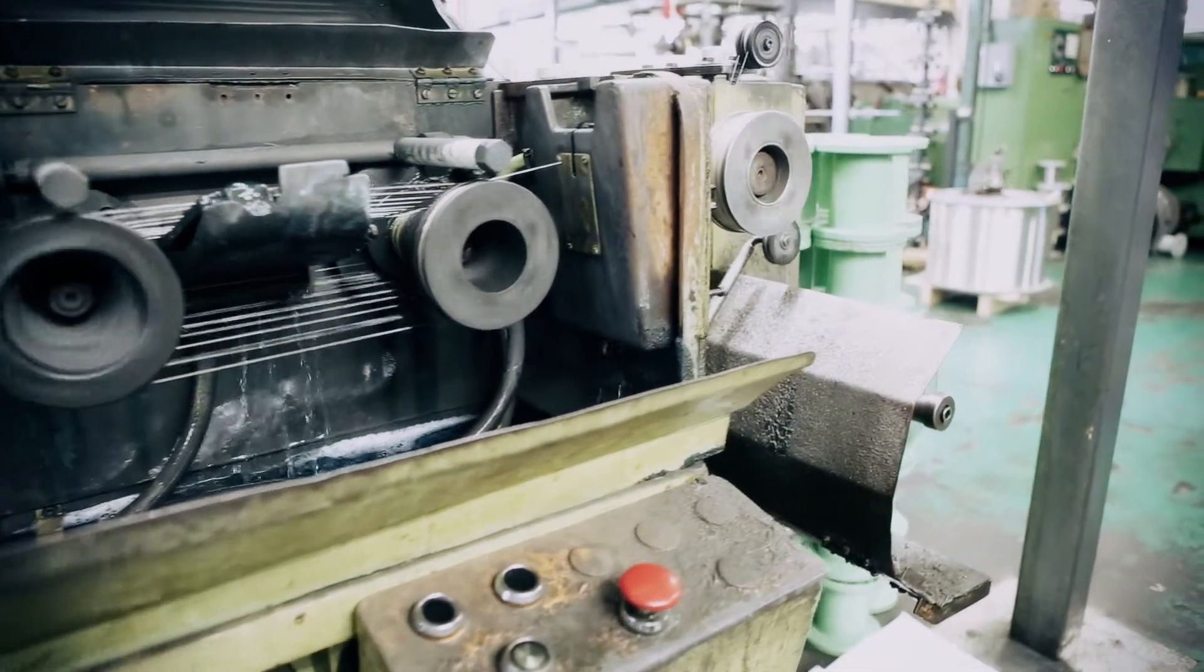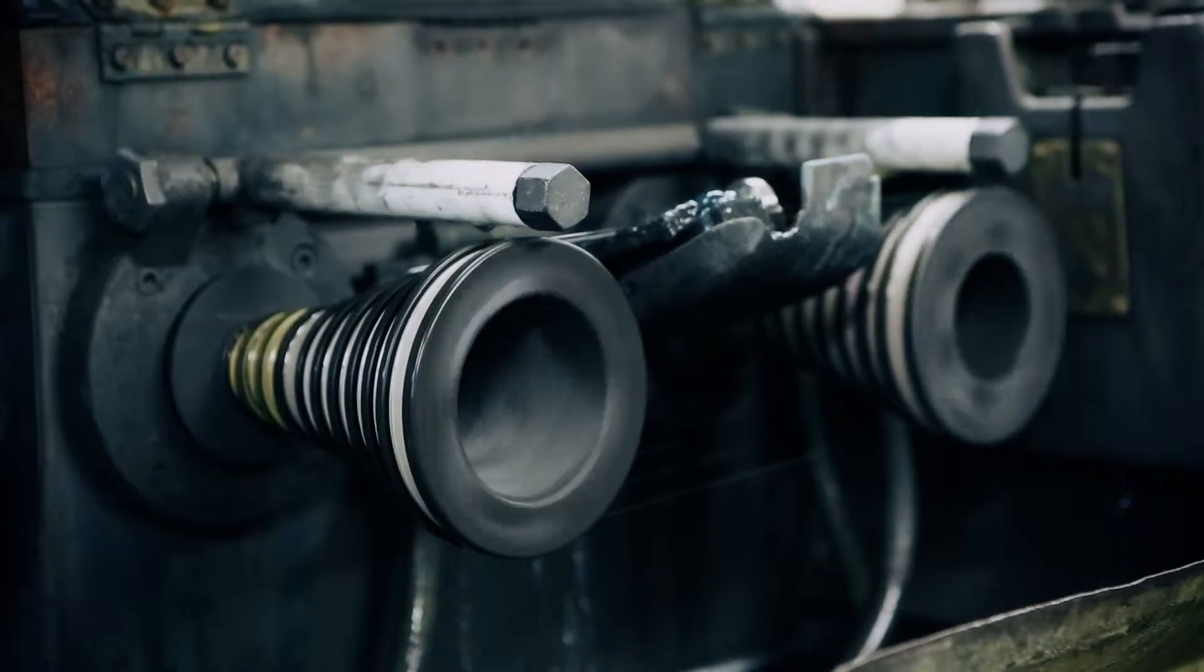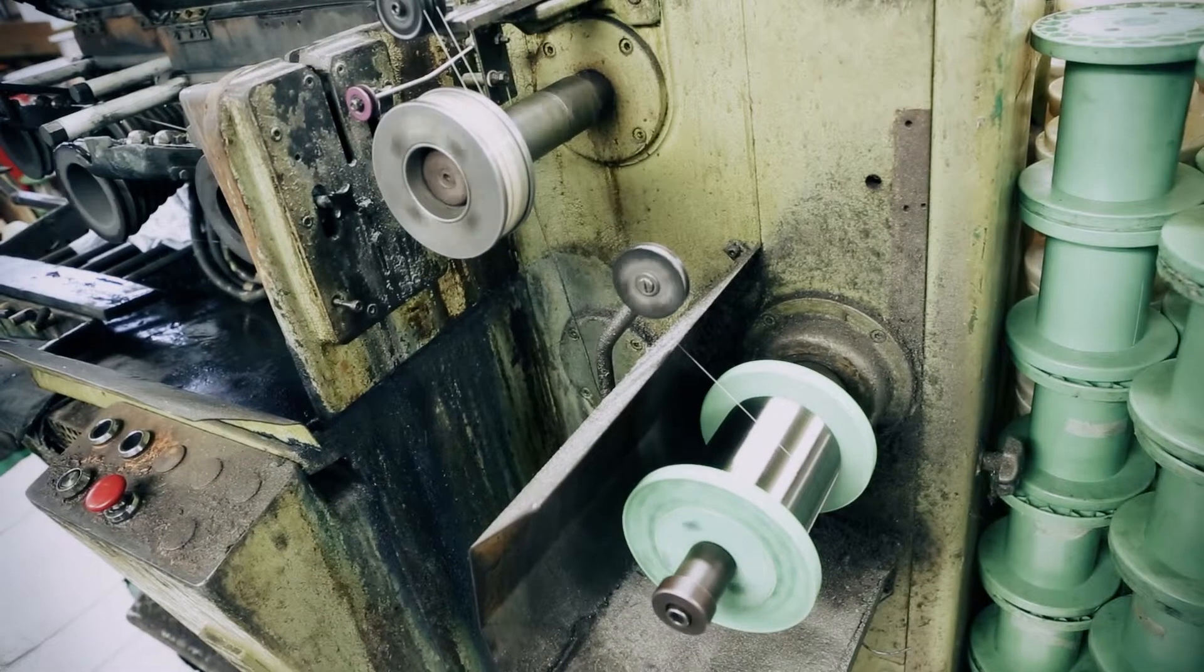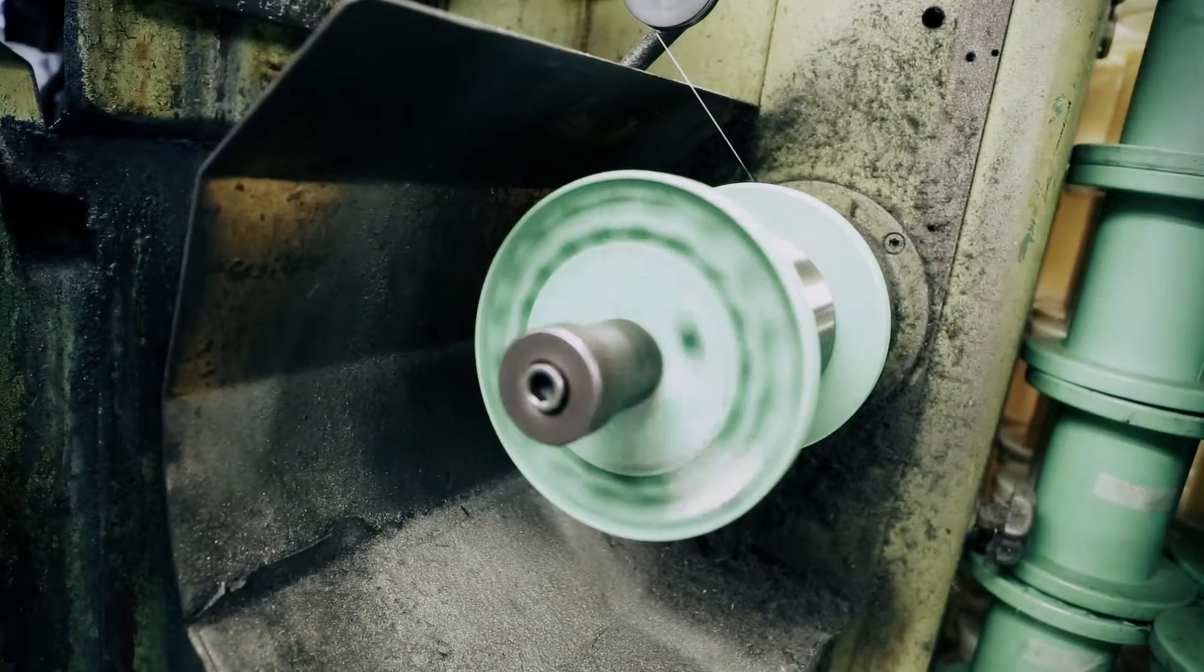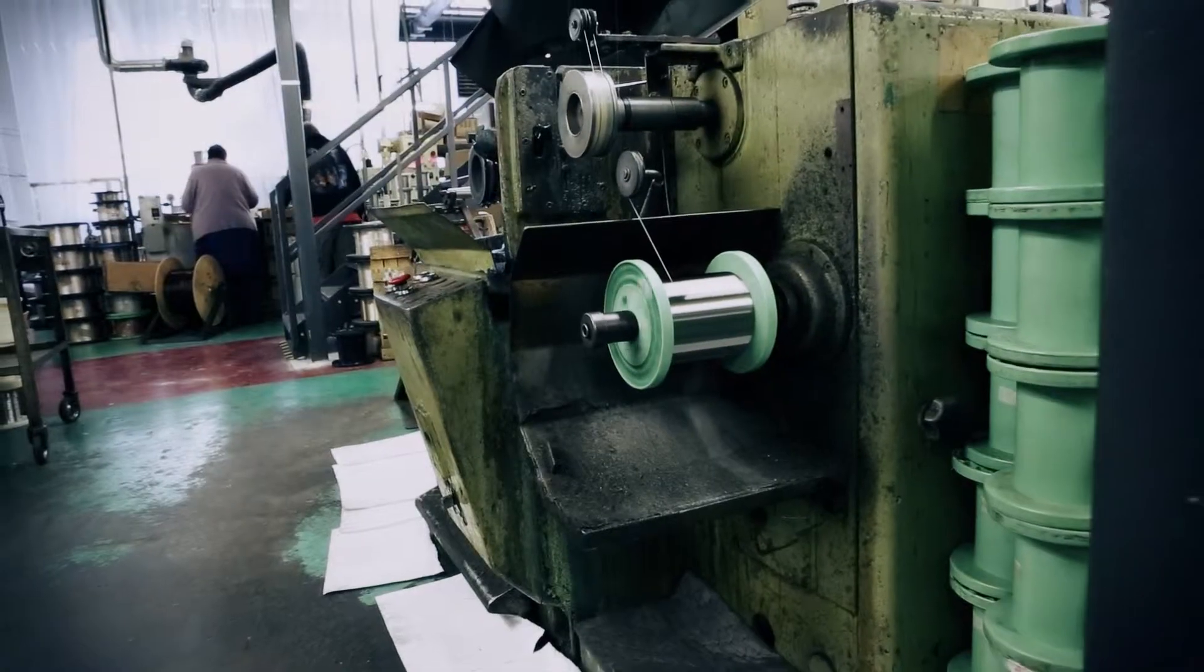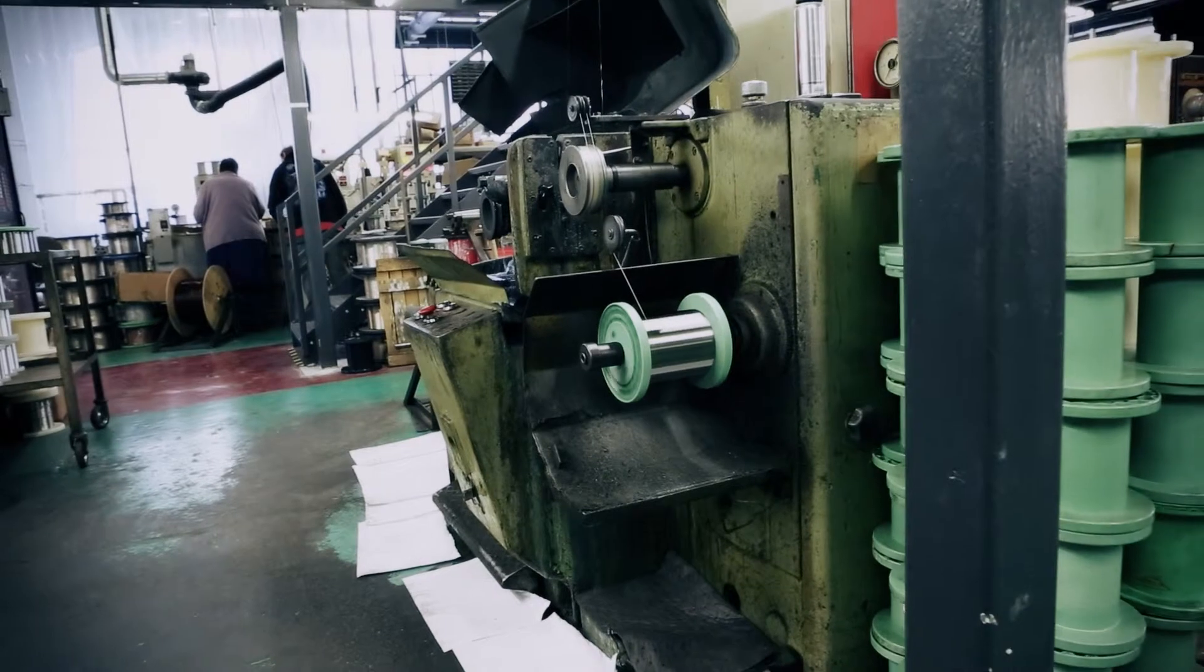Wire is pulled through a series of dies to reduce the size from 0.8 millimeters down to whatever size the customer requires, which in this case is 0.2 millimeters, but the machine is capable of drawing down to 0.1 millimeter.